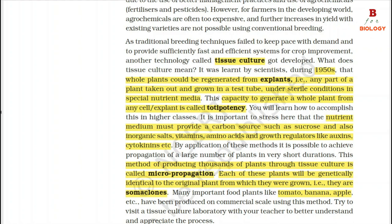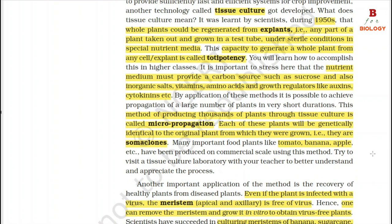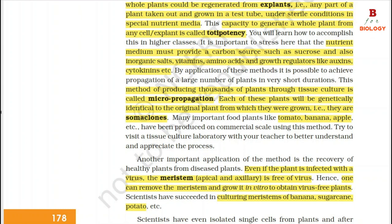It is important to stress here that the nutrient medium must provide a carbon source such as sucrose and also inorganic salts, vitamins, amino acids and growth regulators like auxins, cytokines, etc. By application of these methods, it is possible to achieve propagation of a large number of plants in a very short duration. This method of producing thousands of plants through tissue culture is called micropropagation.